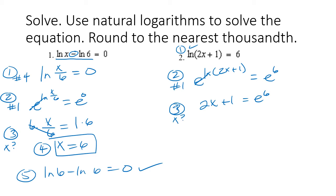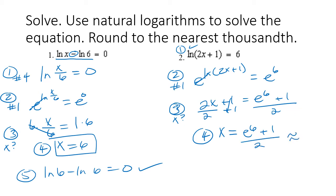Step three: solve for x. Subtract one and divide by two: x equals (e to the sixth minus one) divided by two. That's the exact value. Plugging into the calculator — creating a fraction, e to the sixth plus... dividing by two — we get approximately 201.214.